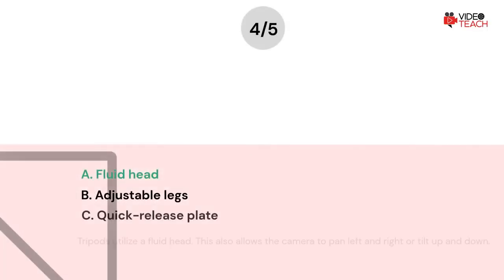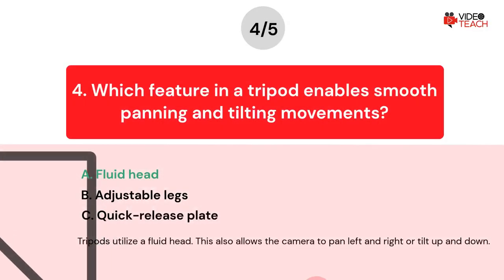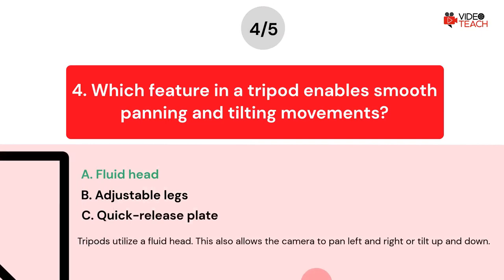The correct answer is A. Tripods utilize a fluid head. This also allows the camera to pan left and right or tilt up and down.